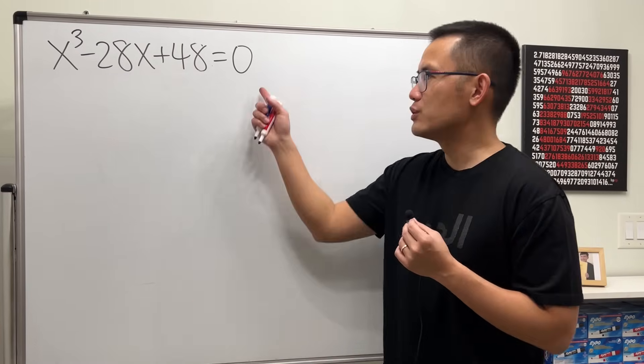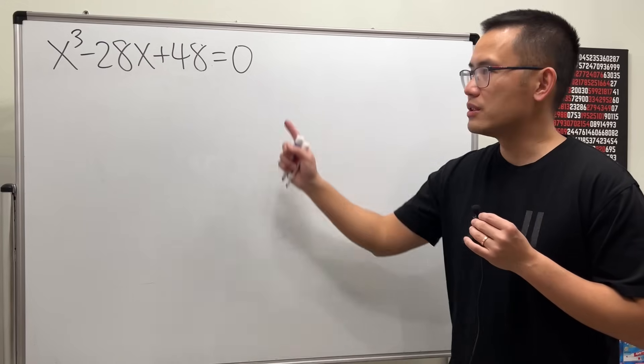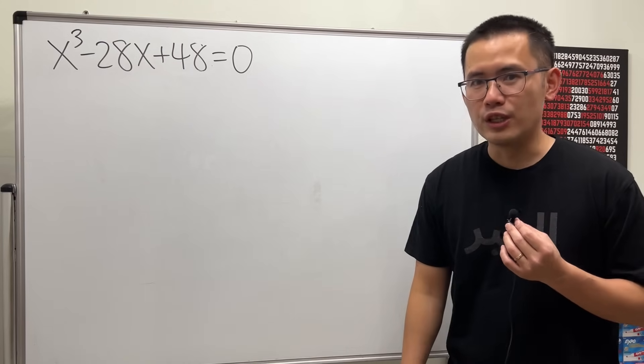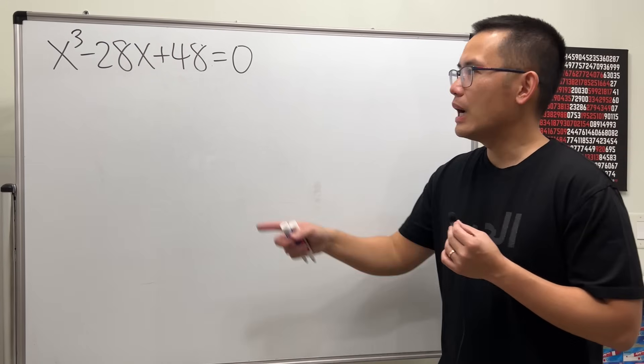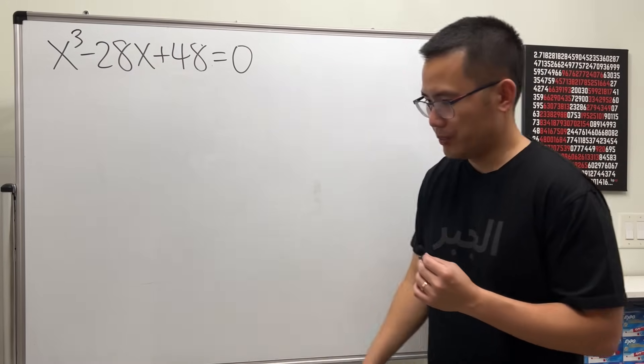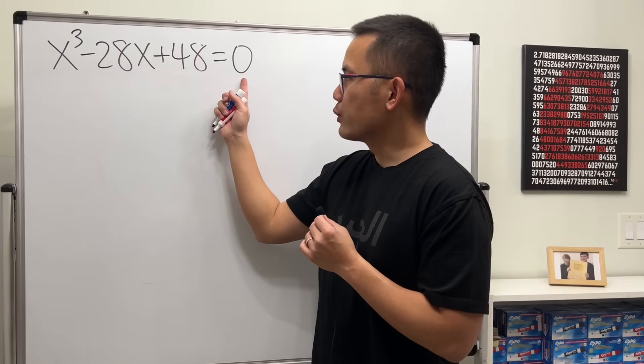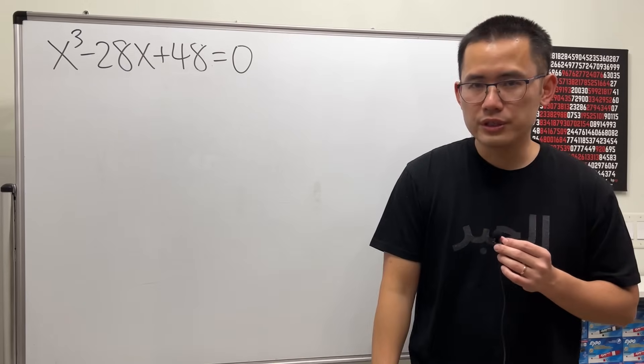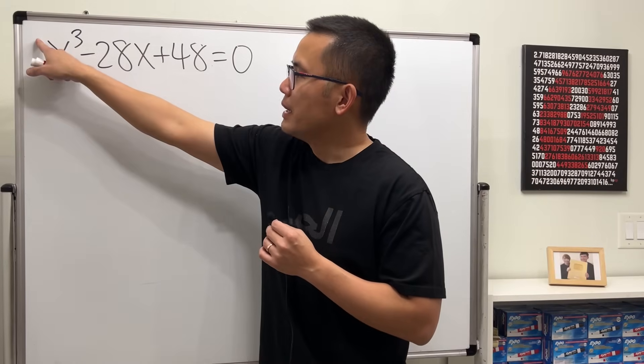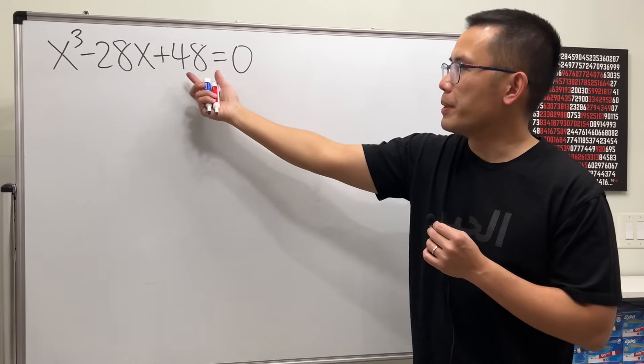But for this one in particular, we don't have to do anything like that. We can just solve this with the most reasonable way, which is the rational zero theorem. I will show you guys how to factor this cubic. Firstly, we have one side equal to zero already, and all the coefficients here are integers. The best part is the coefficient of x³ is 1, so we just have to pay attention to 48 and think about all the factors of 48.